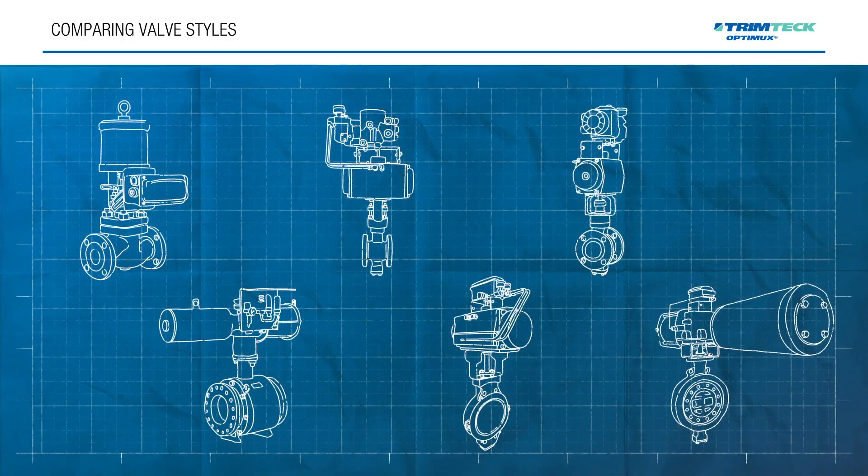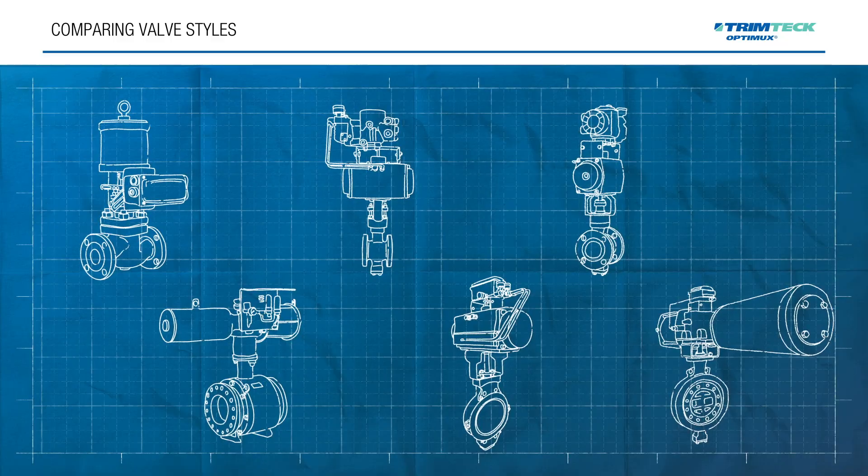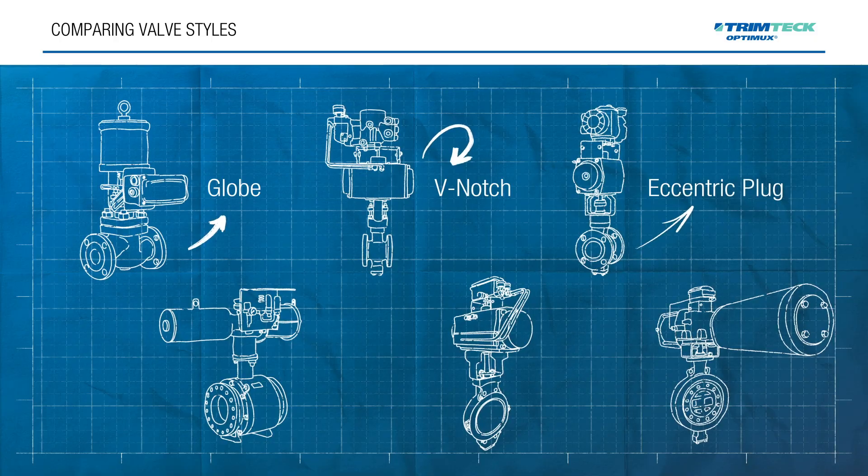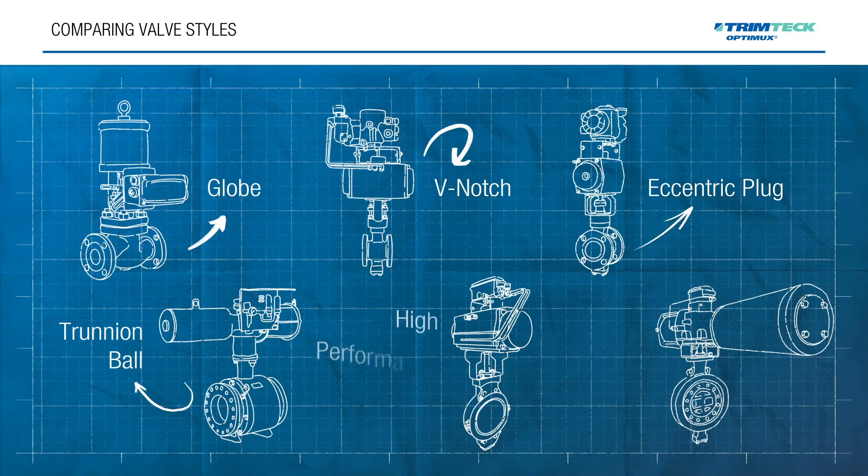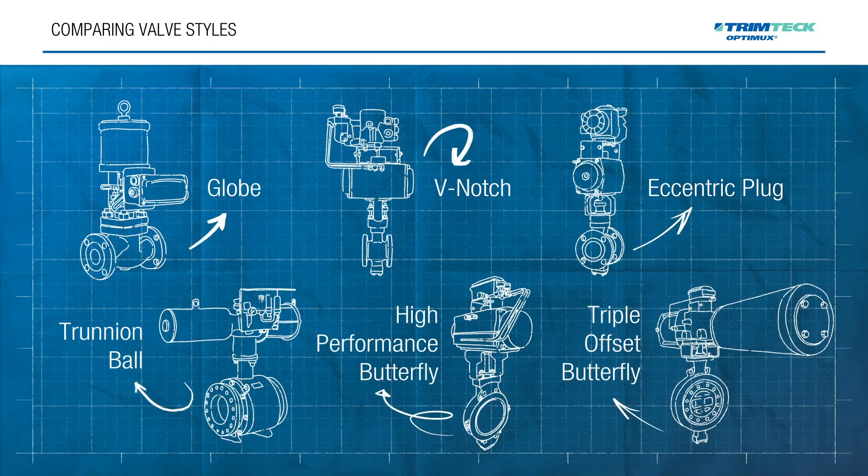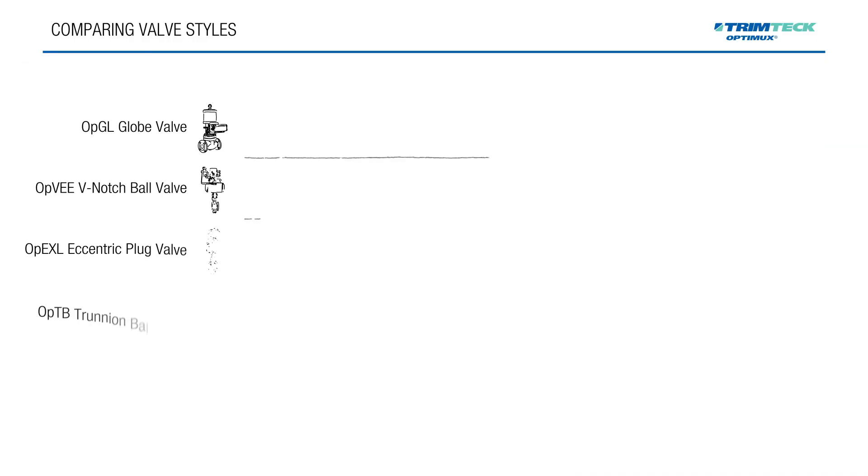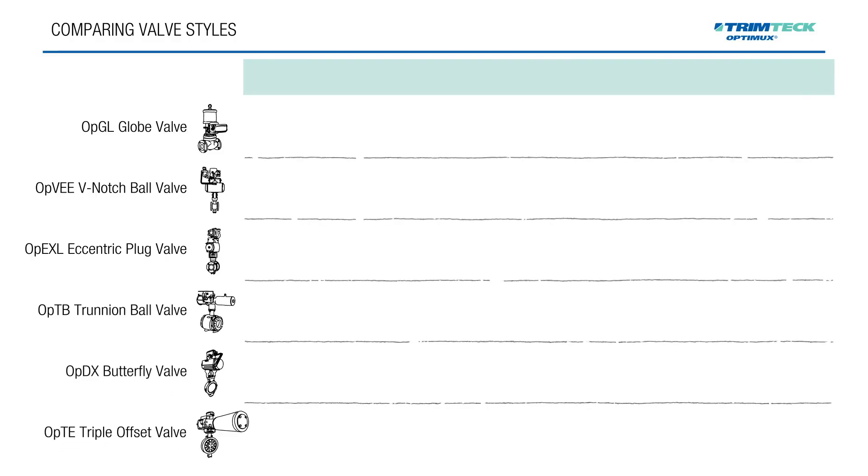In this video, we'll compare some of the most common control valve styles offered by TrimTech: the globe, V-notch or segmented ball, eccentric plug (sometimes called rotary globe), trunnion ball, high performance butterfly, and triple offset butterfly valves. Let's take a look at how they stack up across six important factors.